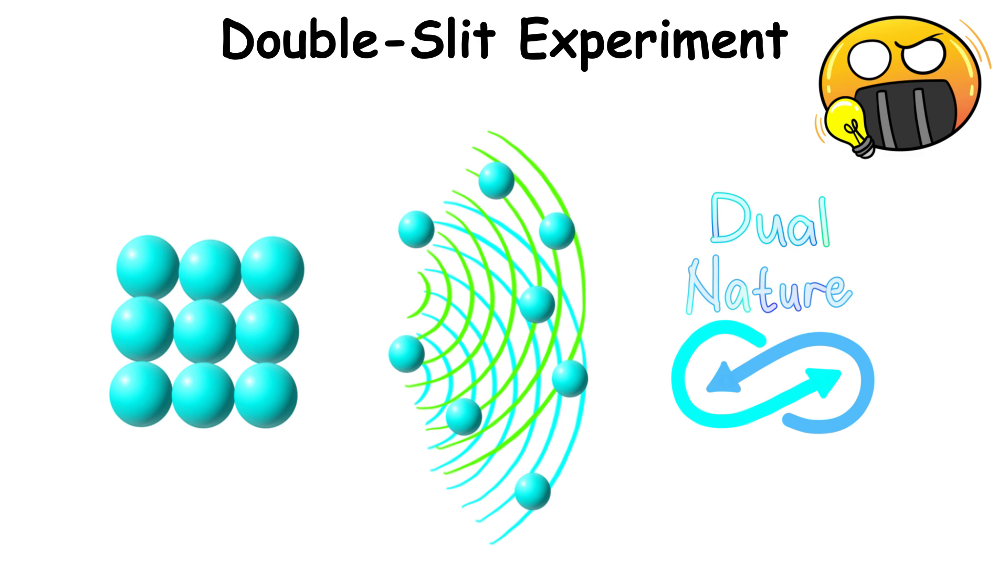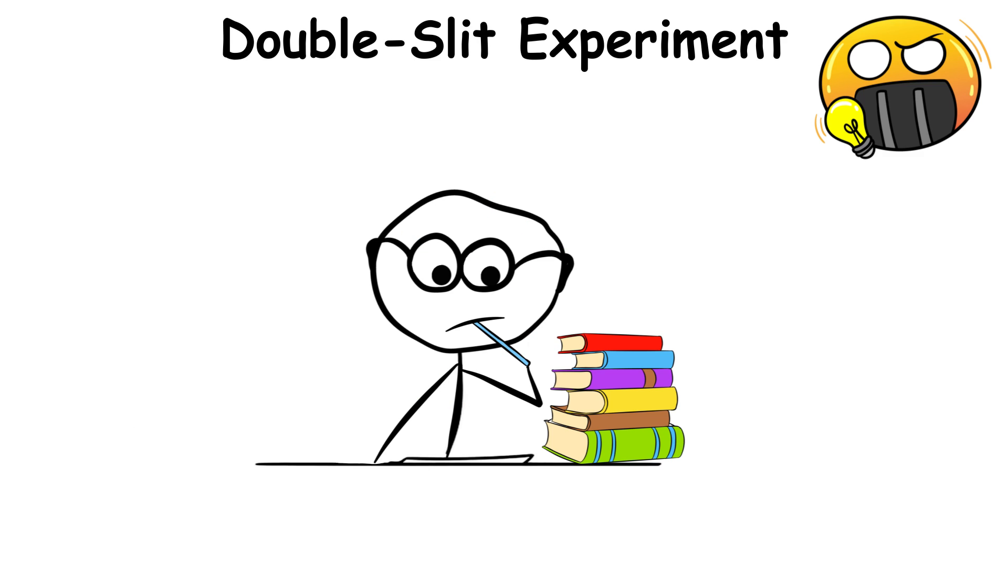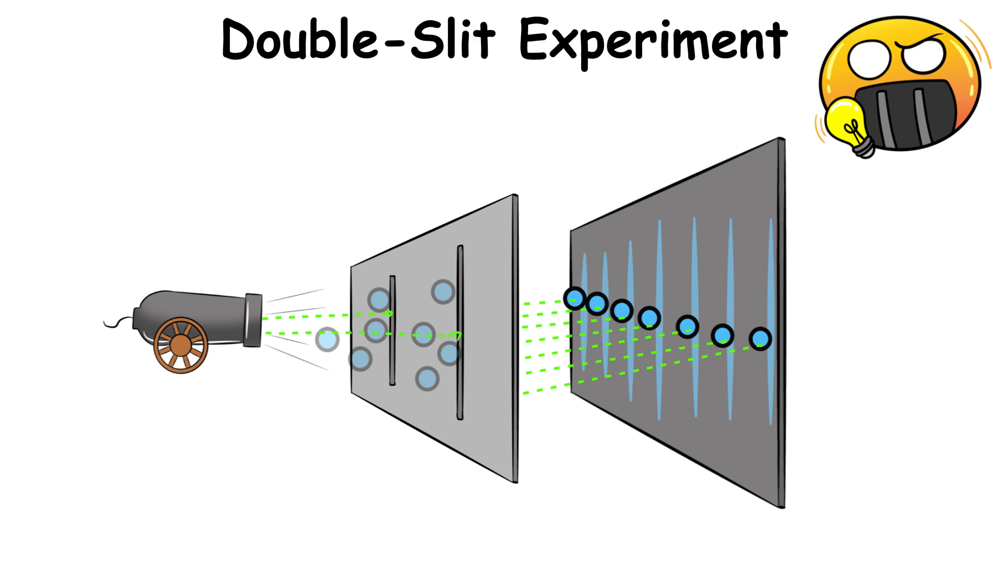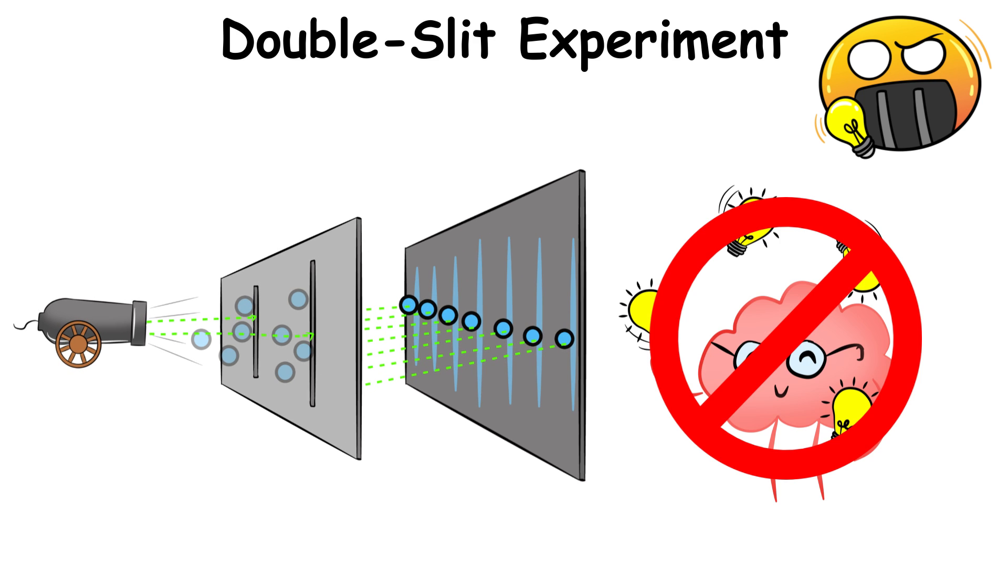Particles can have a dual nature in that they can exhibit wave-like behaviors under certain circumstances. The exact reason for this behavior is the subject of ongoing studies. This is why the double slit experiment only supports the theory, but does not prove it.